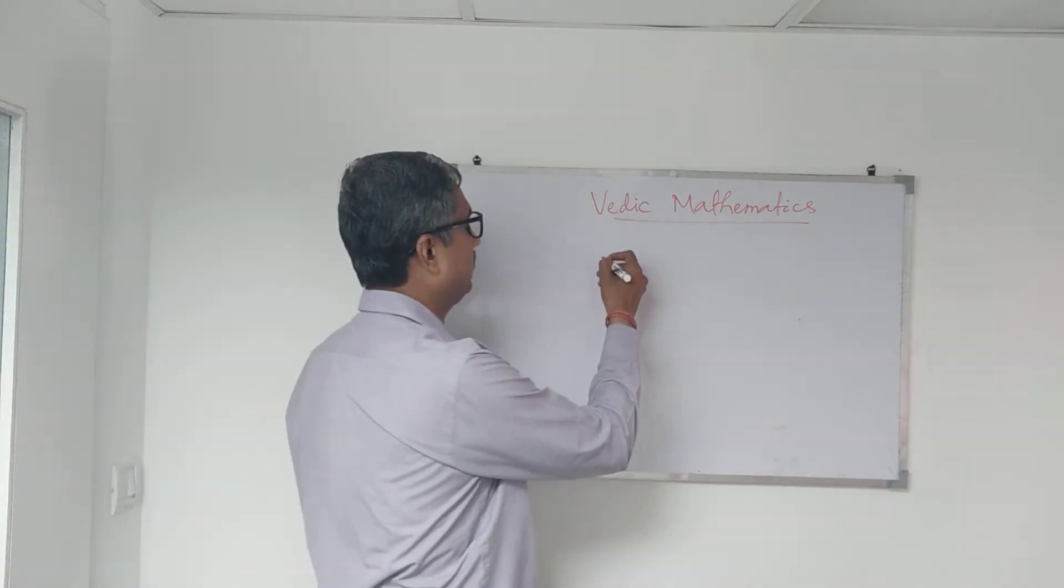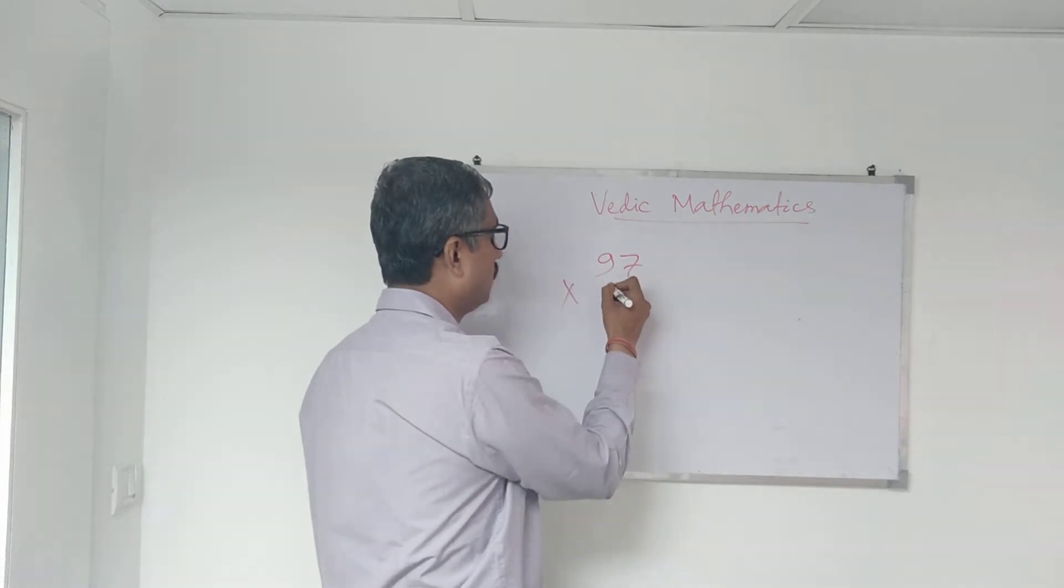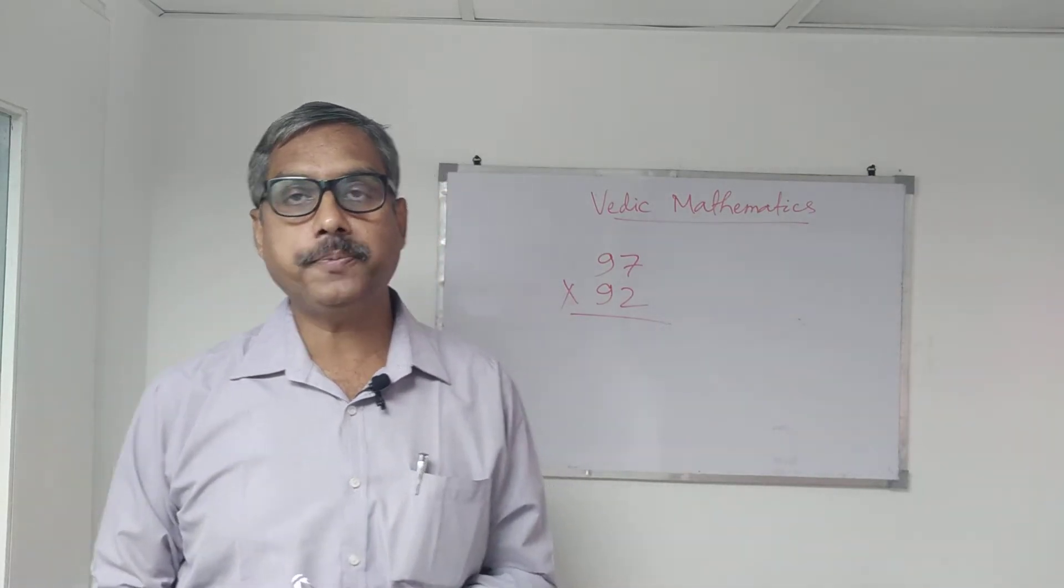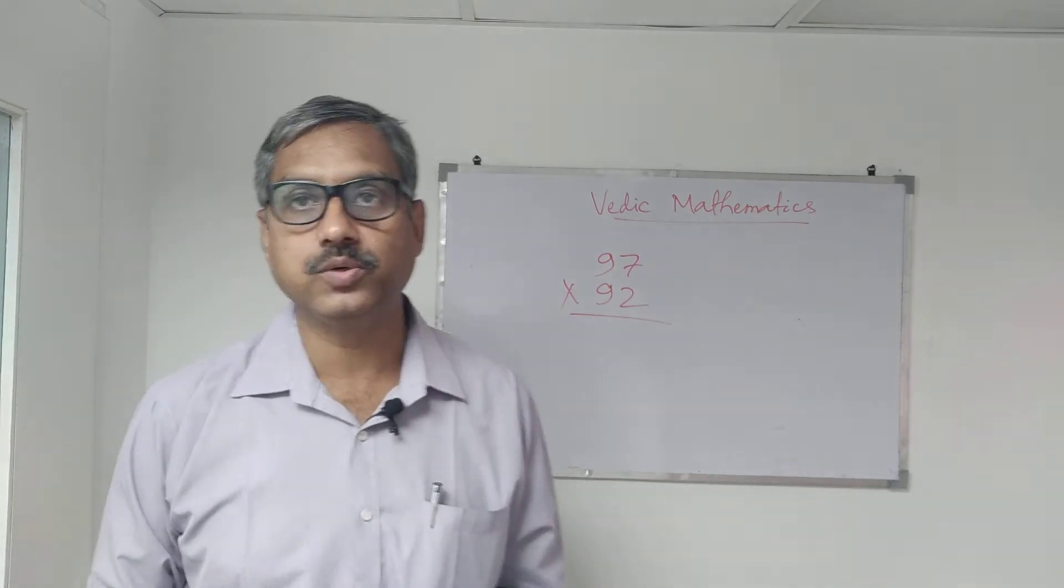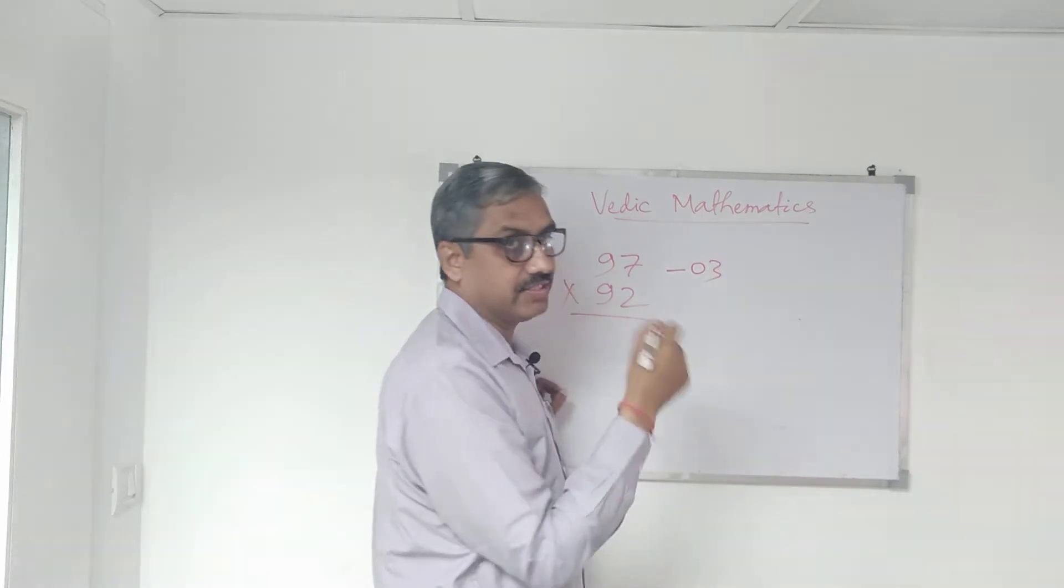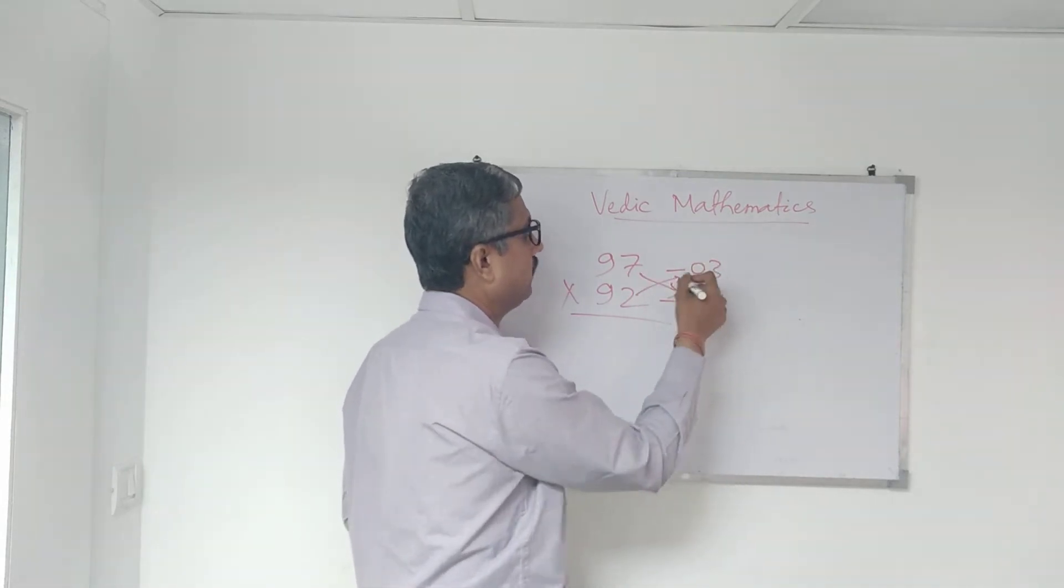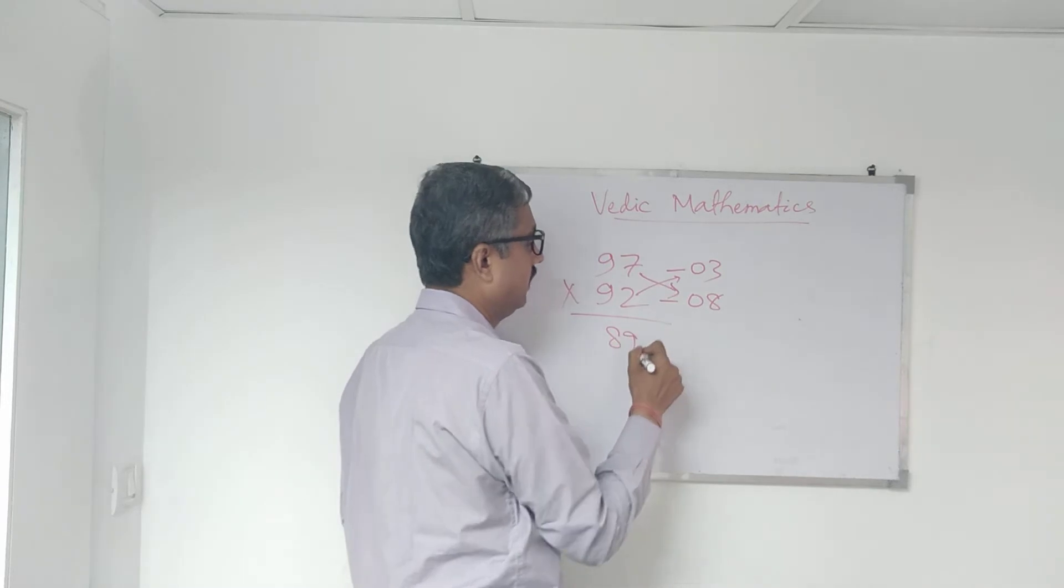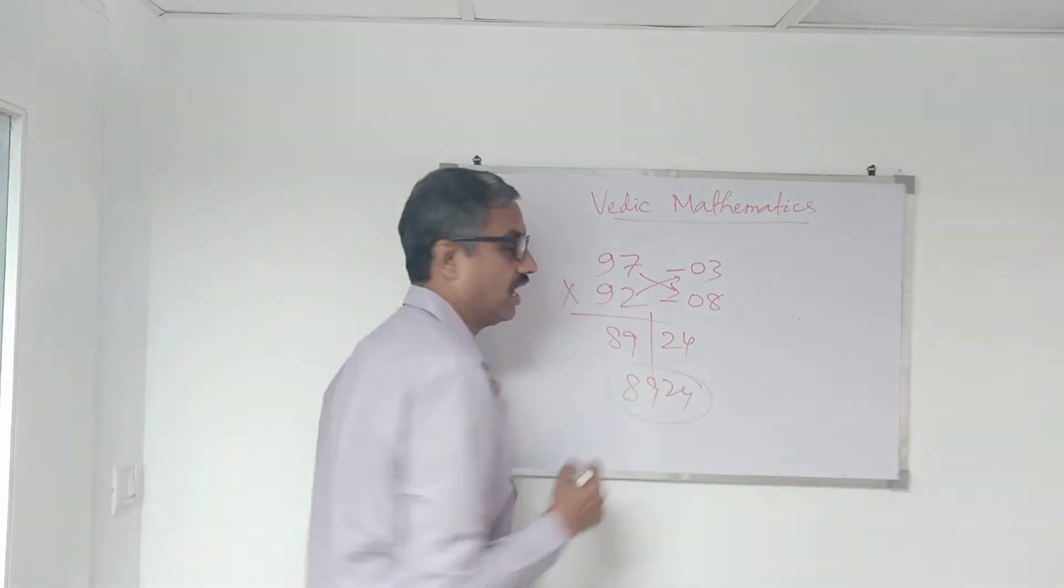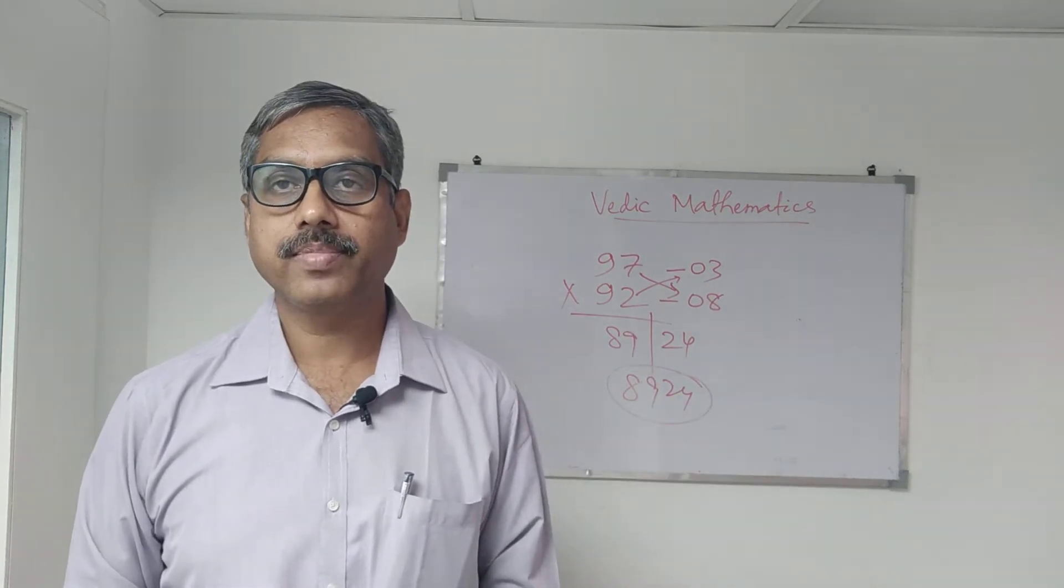Suppose we need to multiply two digit numbers. It is 97 into suppose 92. So friends, very very easily we can do. As it is very near to base, it is just 3 less than 100 and this is 8 less than 100. So only thing we need to minus 92 minus 3 or 97 minus 8. It is 89 and 3 times 8 is 24. So this is our answer. This is our answer. We got our answer in one step.